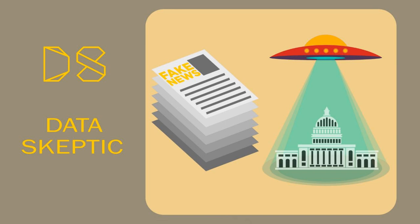If you had to design a system that looked at an email and decided whether it was spam or ham, what strategies might you employ? They check servers that have been blacklisted — just known for sending a lot of spam. You could probably also do an analysis of the email, what kind of words they have in there. That's right, I want to focus this show on the content-based analysis.